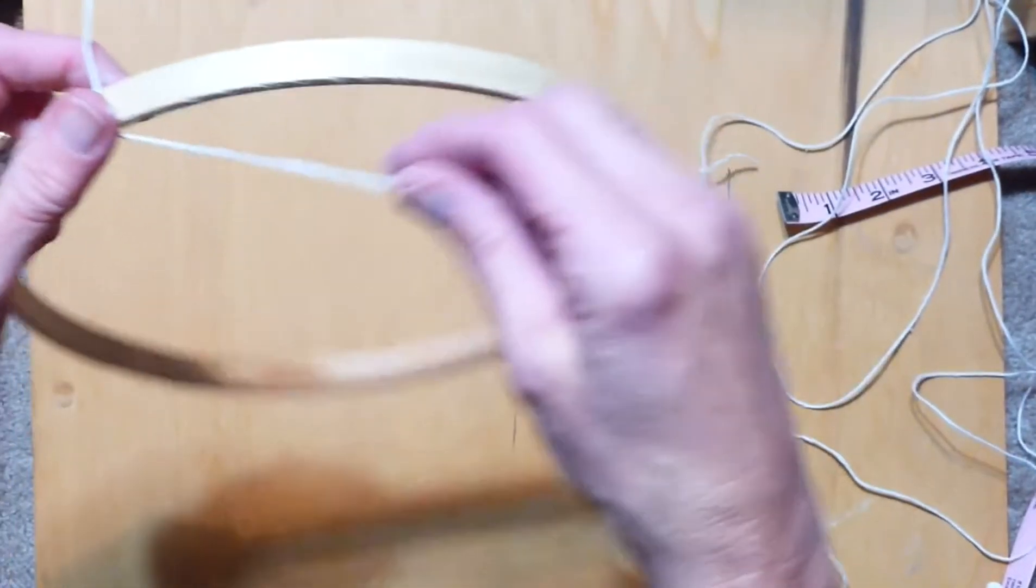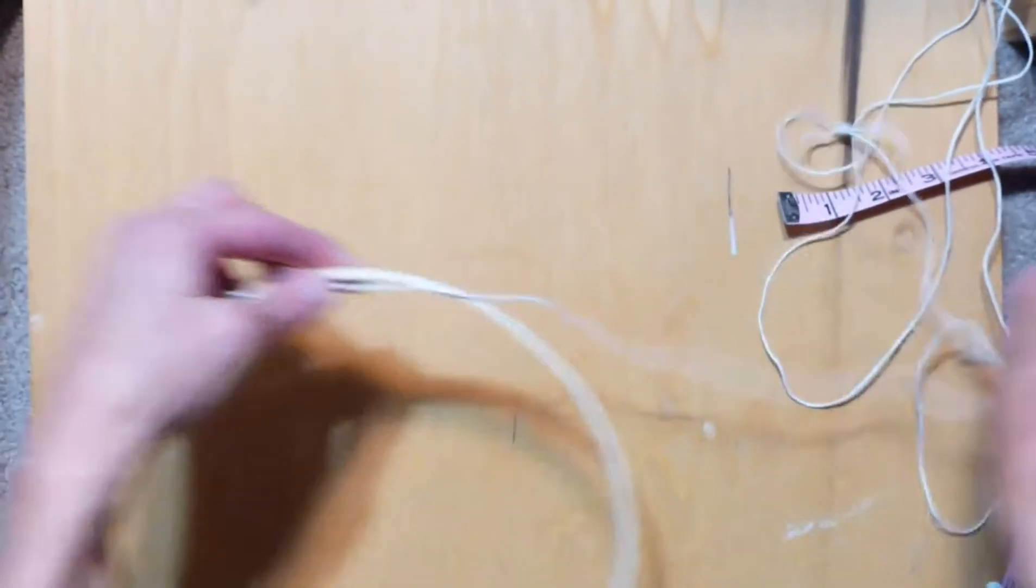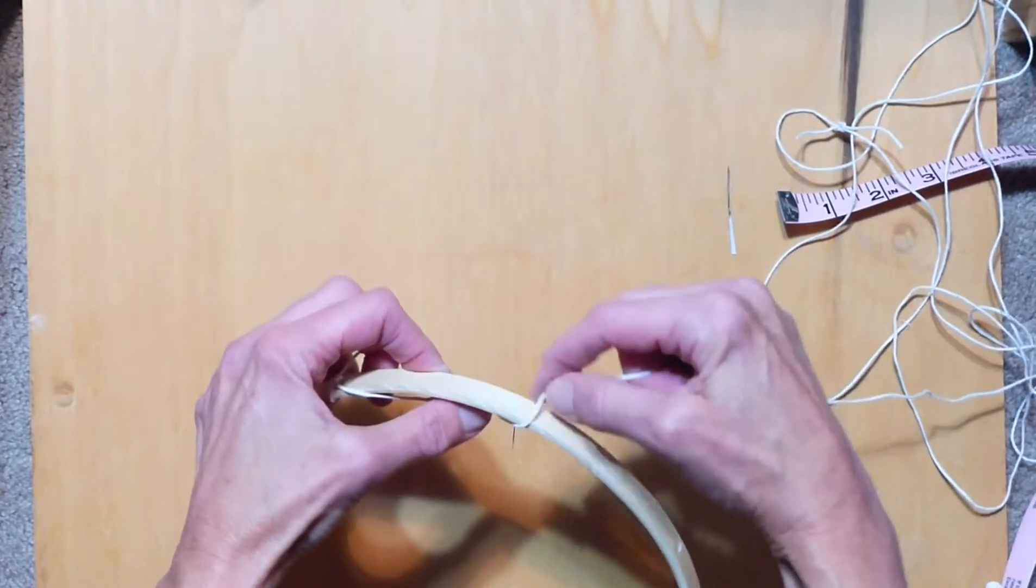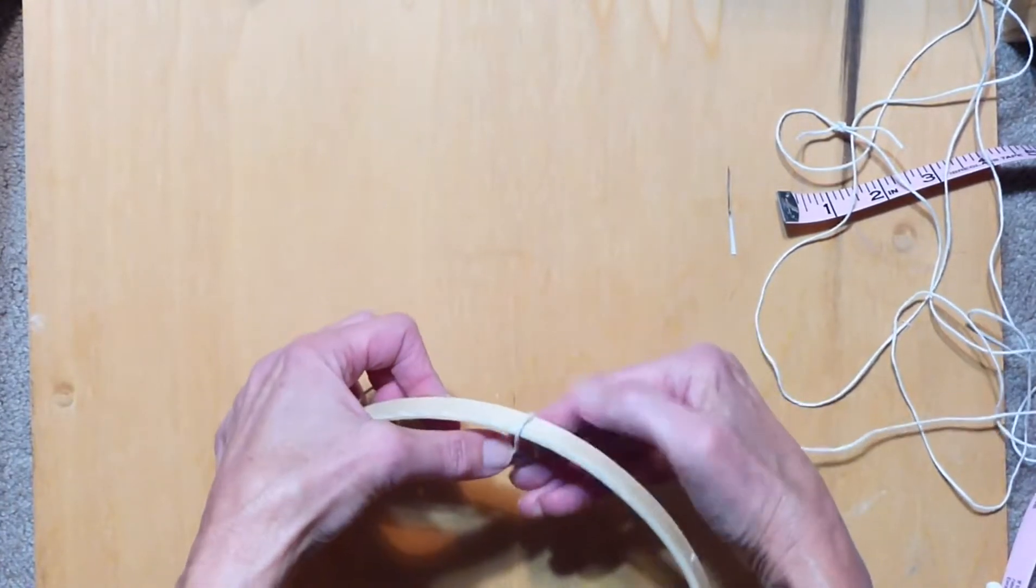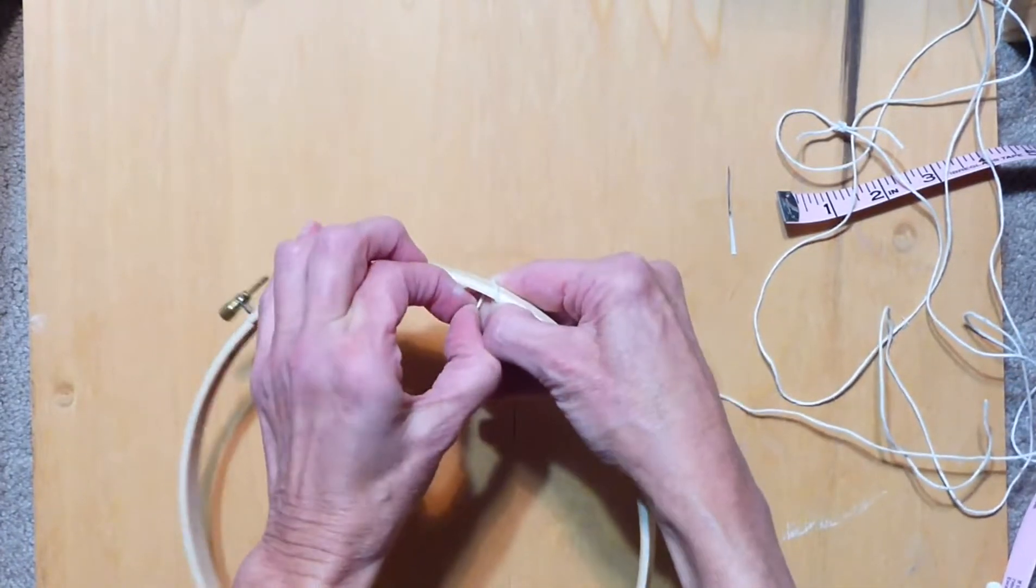I'm going to pull it across like this and draw it towards the back of the hoop and pull it through the front.